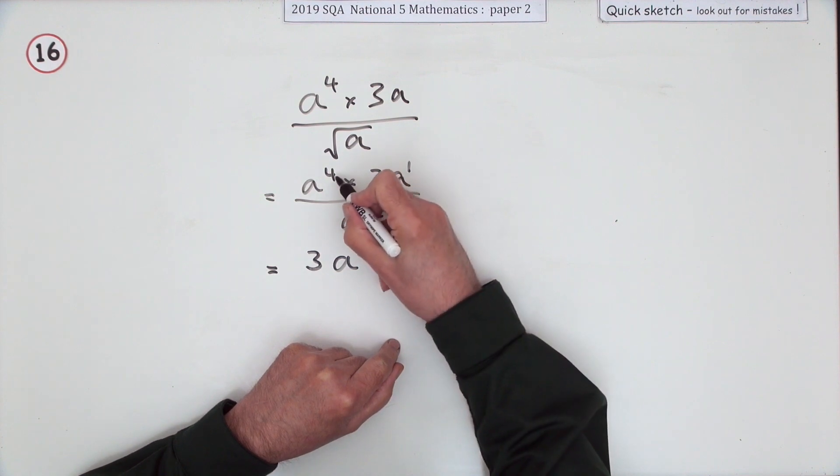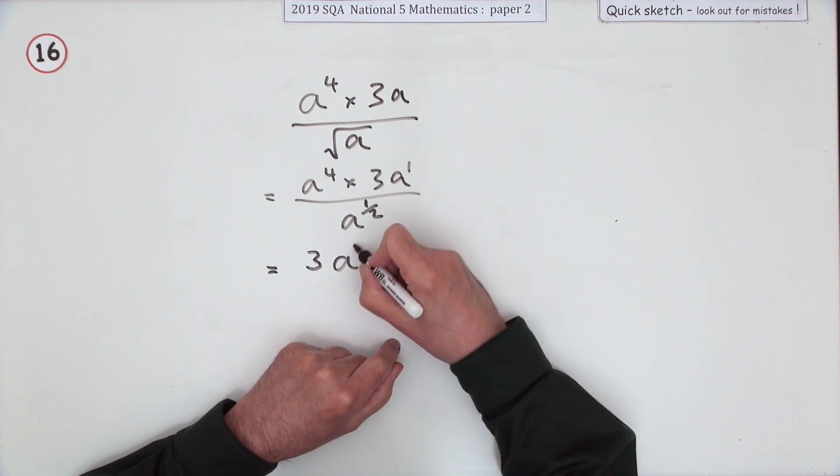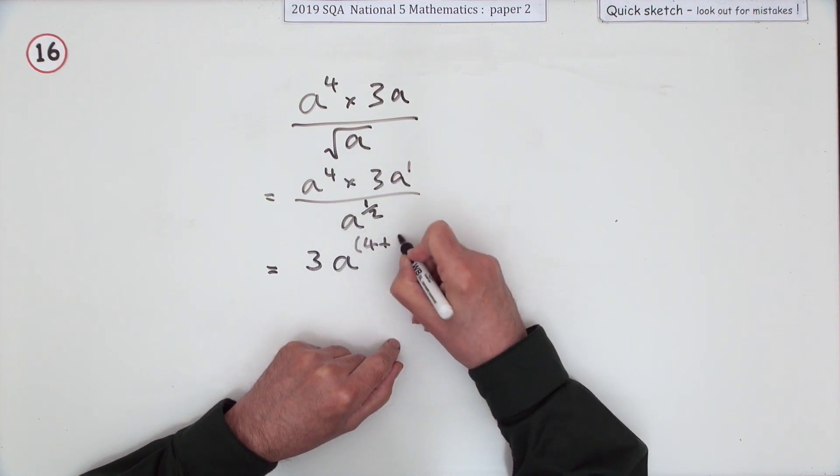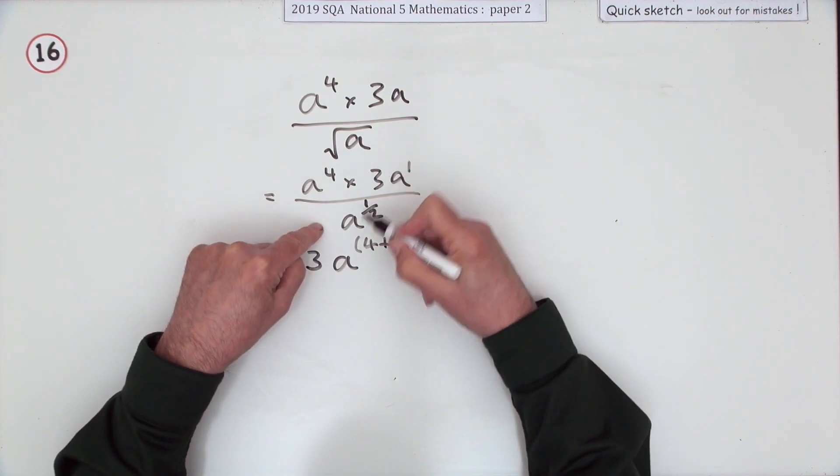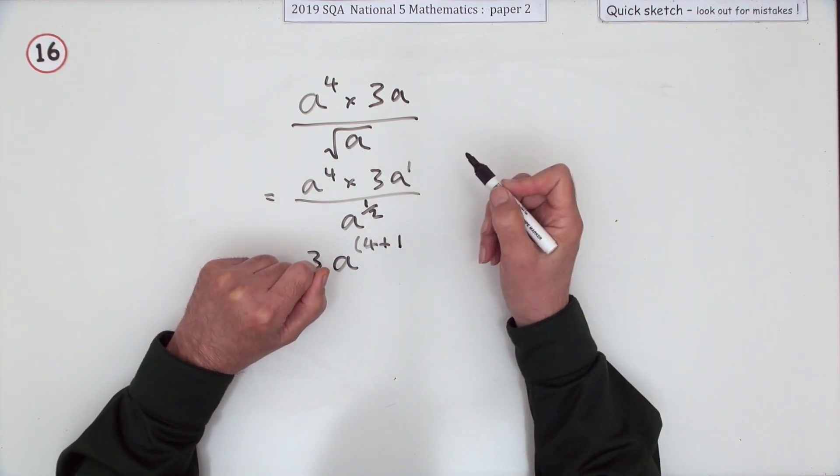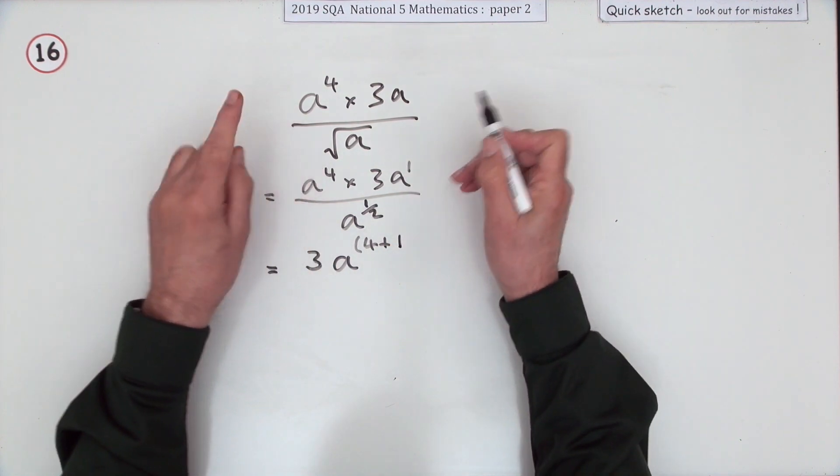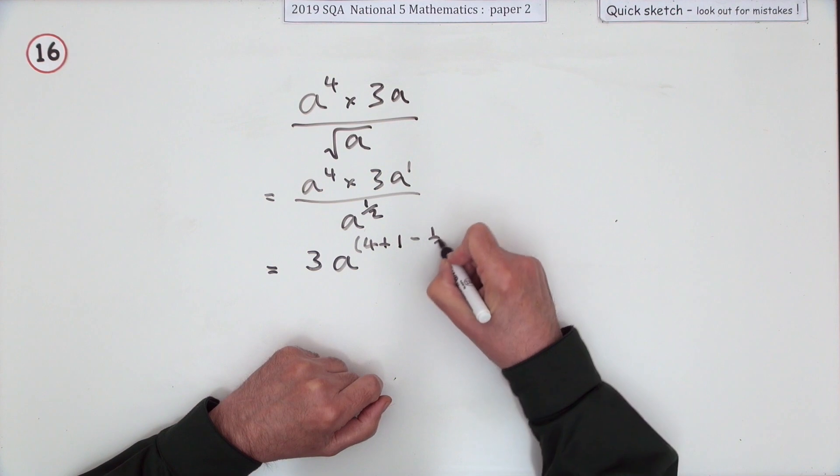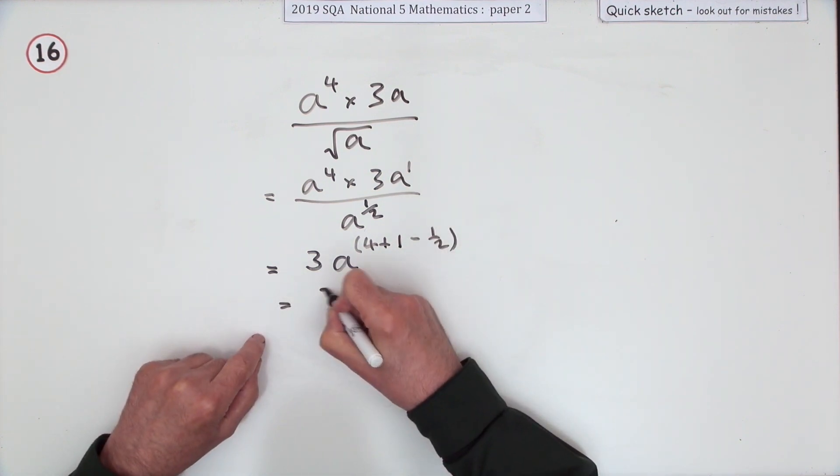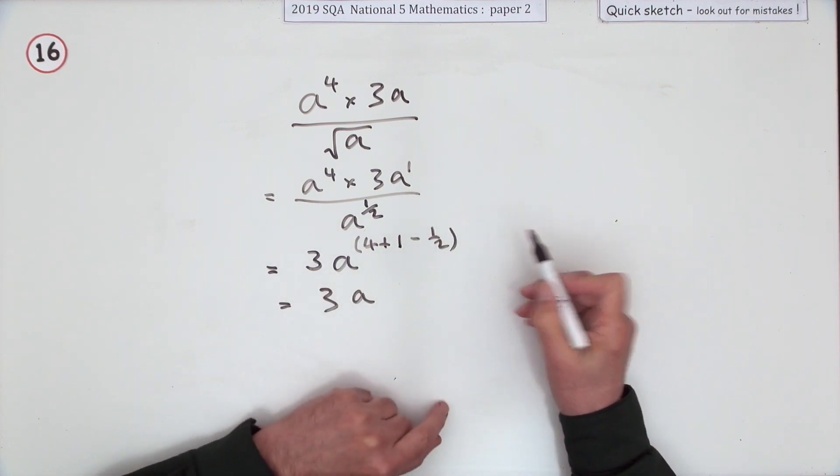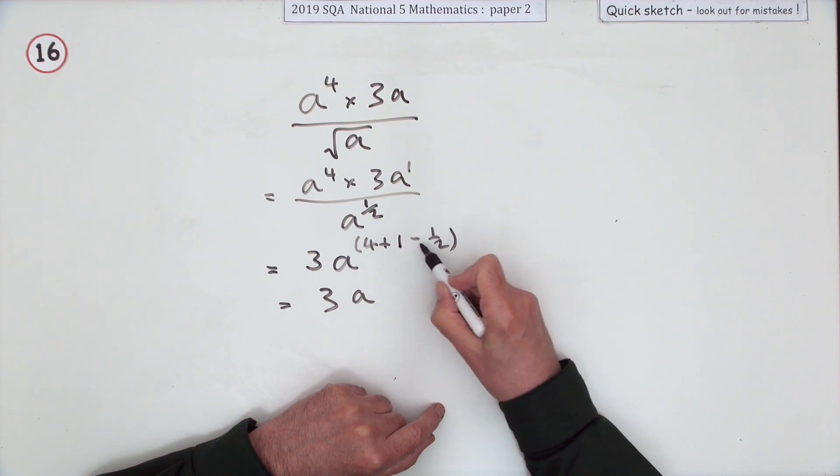I'll just emphasize that that's power 1, so the top will be 4 plus 1. I'm going to put it in one big go. If you're dividing terms with the same letter, you subtract the powers. So the answer to the top will be minus the half. That's going to be 3a to the power... now you've got 5 take away a half, which is 4 and a half.